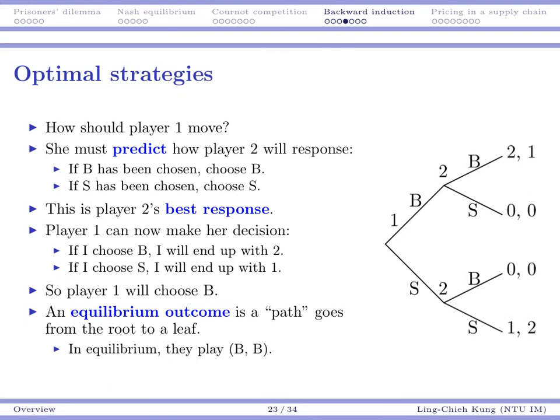So now we want to find their optimal strategies. So we ask, how should player one move? If you are player one, the thing you want to do is to predict how player two will respond to your decision, right? Because you are the leader of this game. So once you make your decision, player two sees it and then player two will optimally respond to your decision. So we first treat ourselves as player two and then try to see what should player two do.